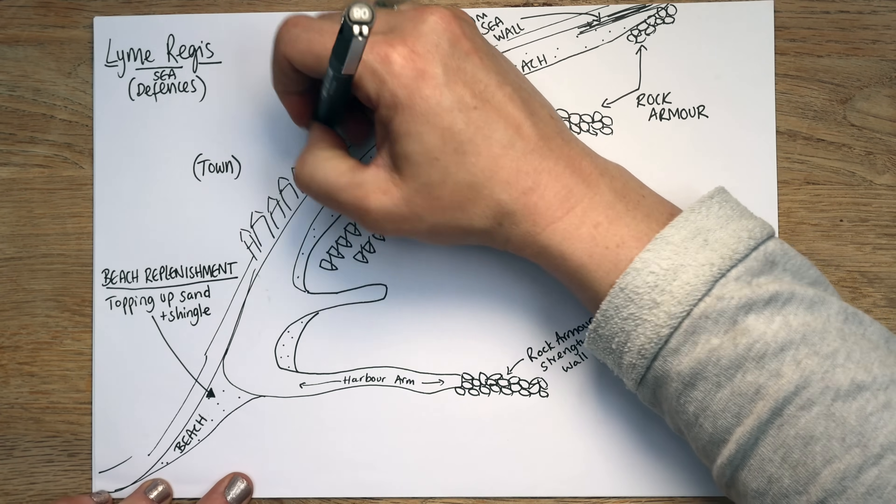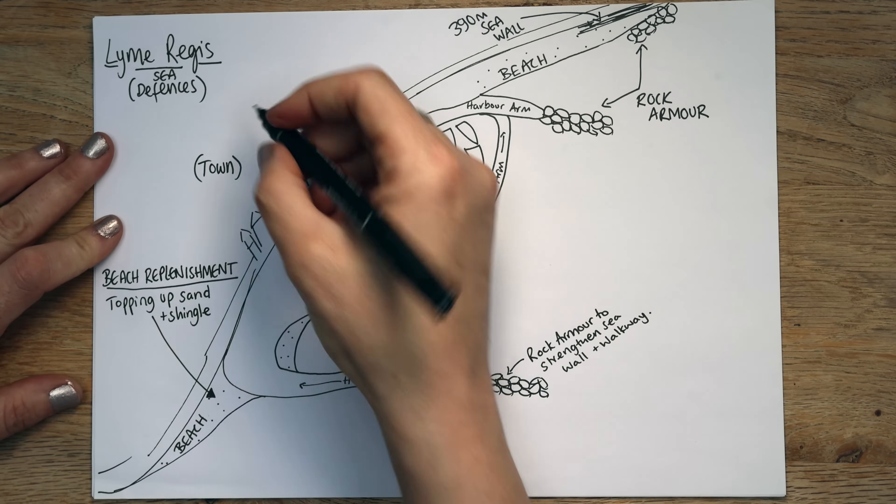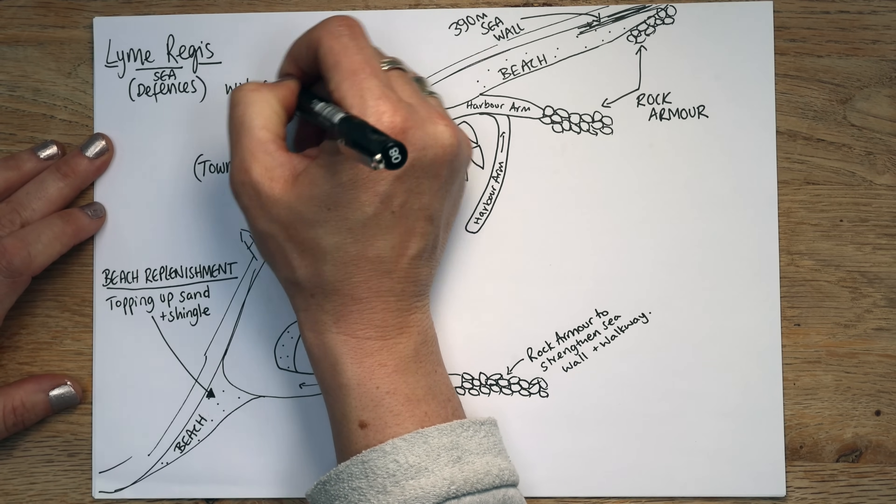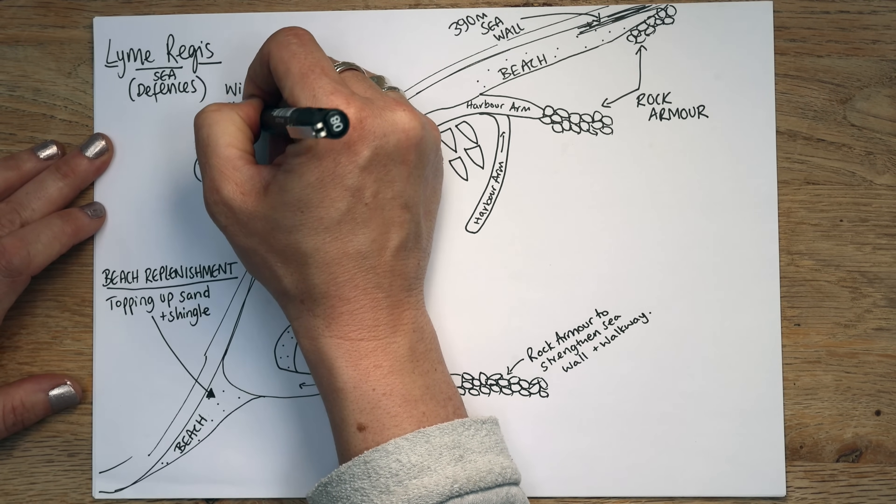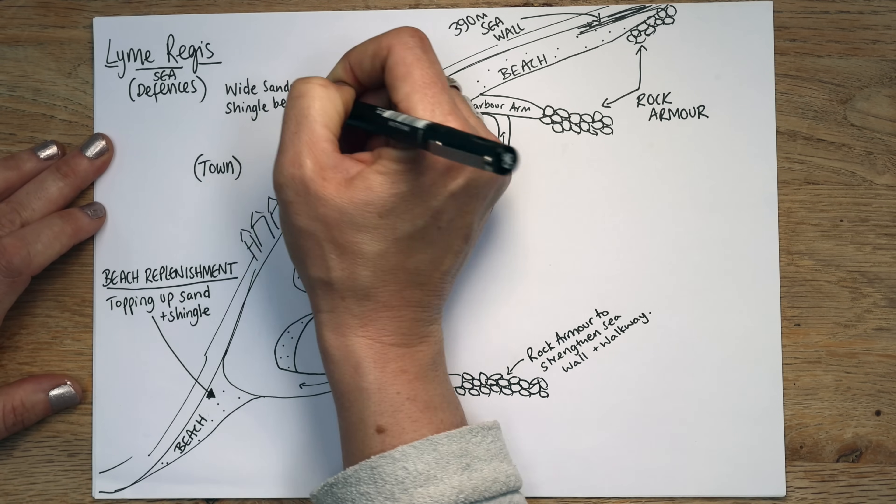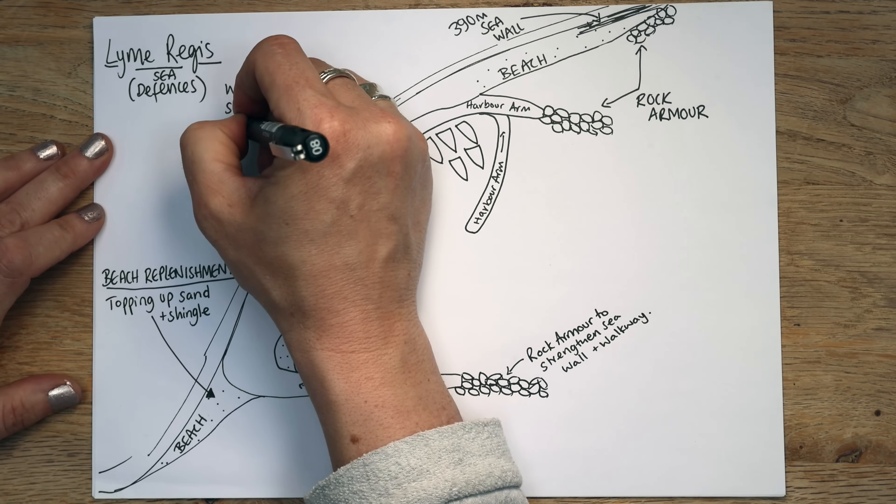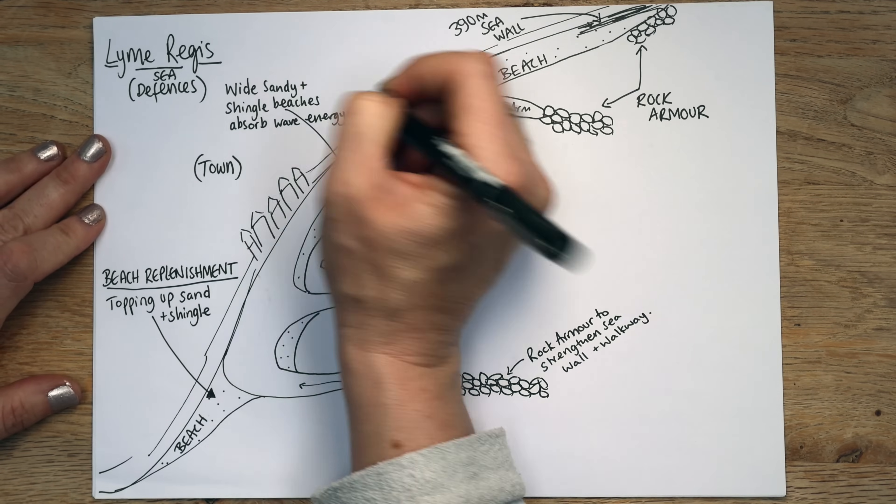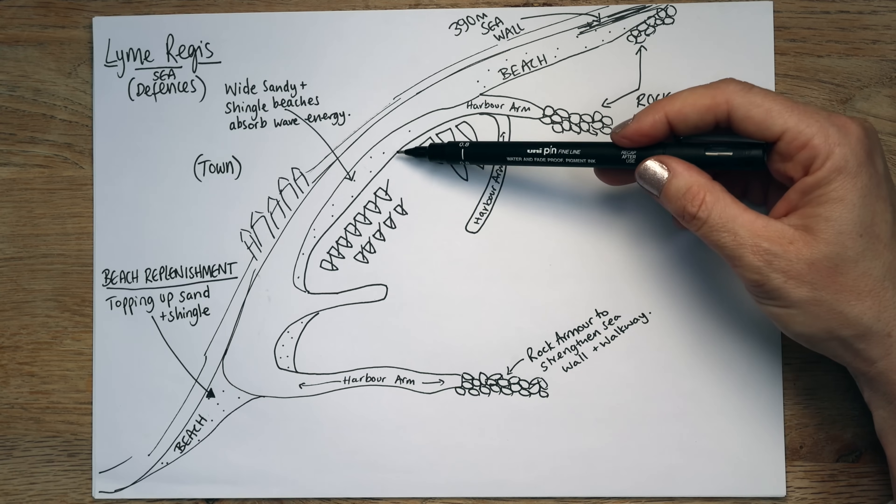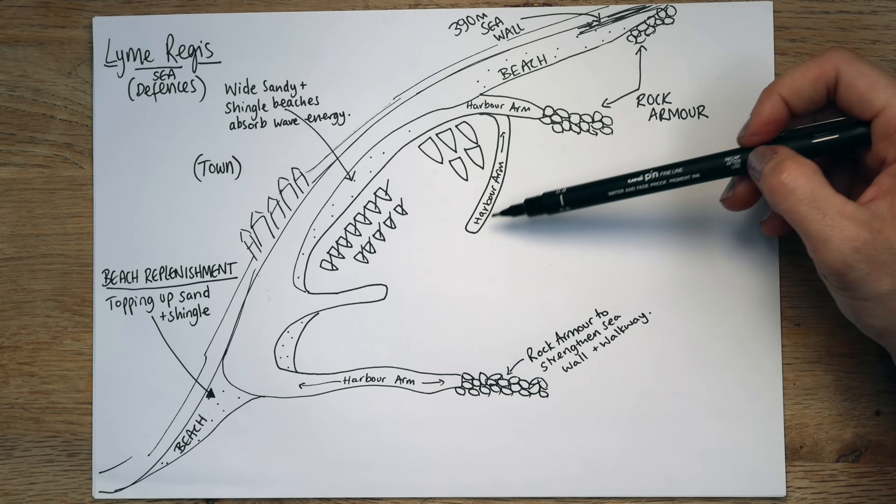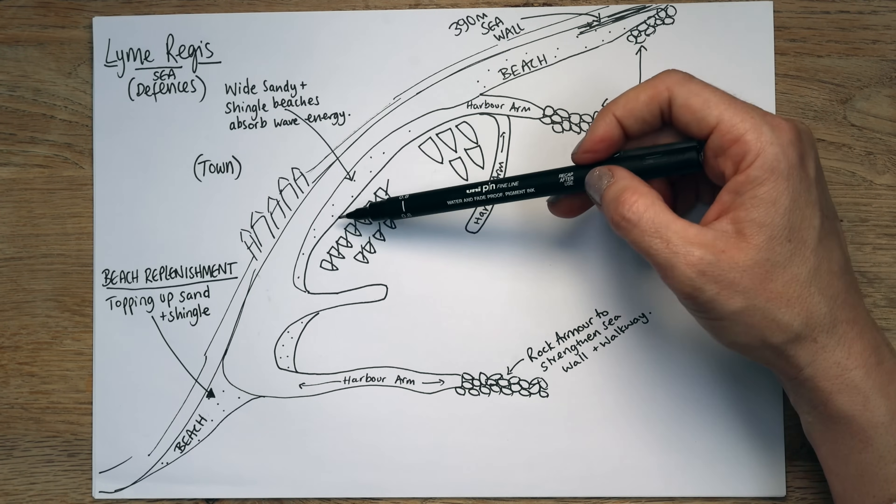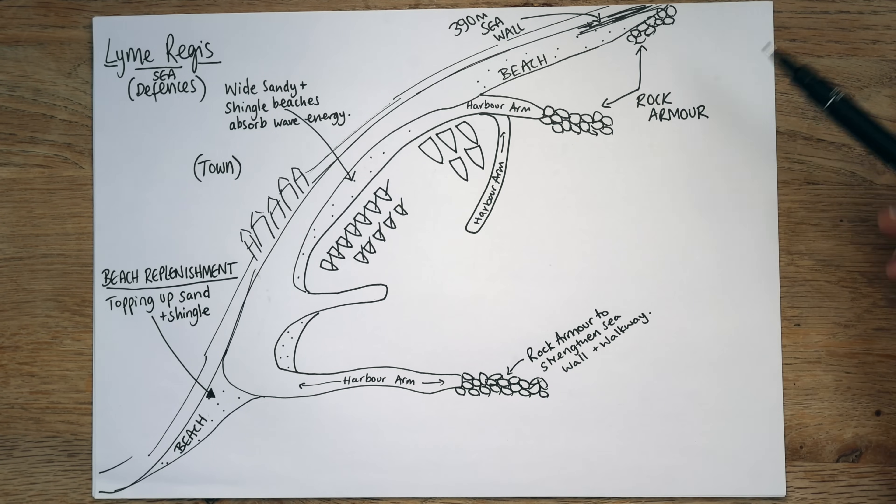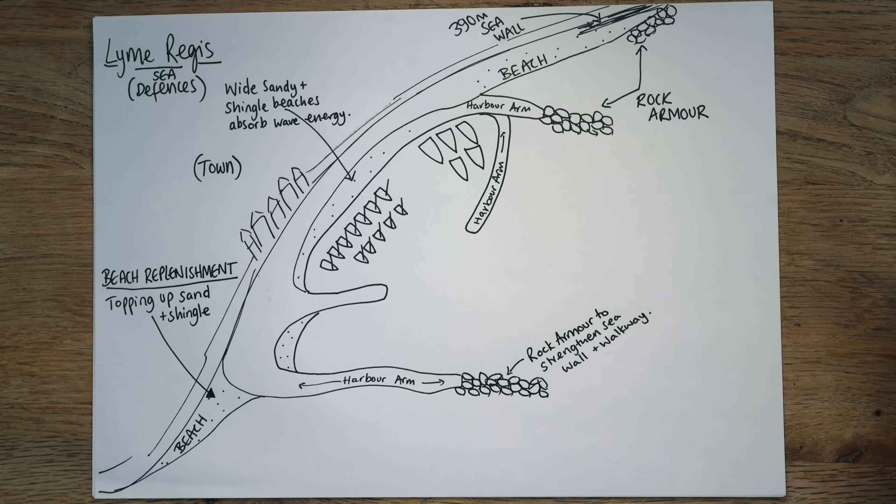So this is called beach replenishment. And they're replenishing the material that's on there. So in Lyme Regis it's a mixture of topping up sand and shingle. And the reason that they do that is because the beaches themselves are a sea defence. They absorb a lot of wave energy. So another arrow to this big beach. And we're going to say wide, sandy and shingle beaches absorb wave energy.